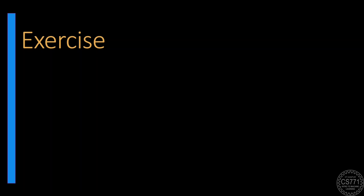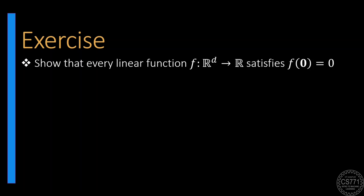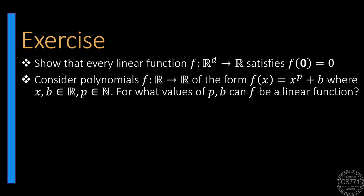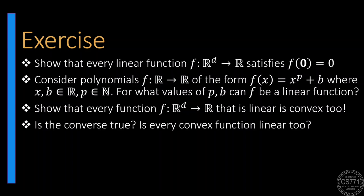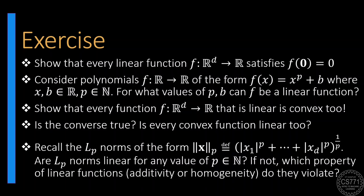Please solve these exercises to increase your familiarity with linear functions and their properties. Show that a linear function must give zero output if the input is the zero vector. Find out which sort of polynomials are linear functions. Show that every linear function is convex too. Explore if the converse is true — whether every convex function must be linear — and come up with counterexamples if your answer is no. Finally, recall that the family of LP norms that we have been using in several applications are also real-valued functions over vector spaces. Are these norms linear functions?